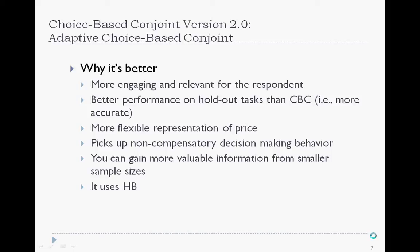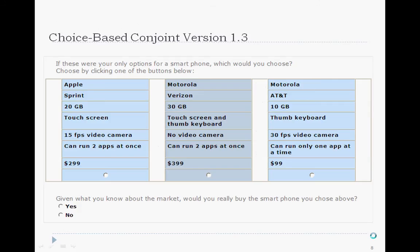ACBC picks up on what's called non-compensatory decision-making — this is when respondents set minimum or maximum acceptable values, cutoffs, or thresholds for certain attributes. The respondent is specifying that they must have something or that something is unacceptable, and the result is a more relevant set of choice tasks unique to the individual respondent. ACBC is analyzed using HB, and we know that's a good thing.